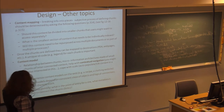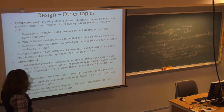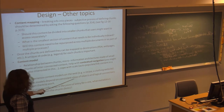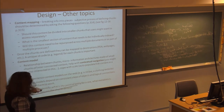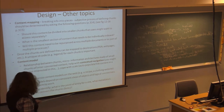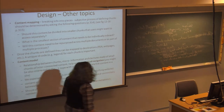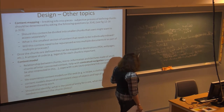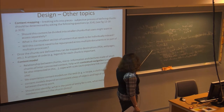We experience content models on the web — like on a recipe or a clothing site — where there are certain consistent ways to access content. Content models depend on consistent steps of objects and logical connections between them. For example, a recipe has ingredients at the top and steps below. You should also identify the entry point of the site and what metadata is needed to connect the chunks.